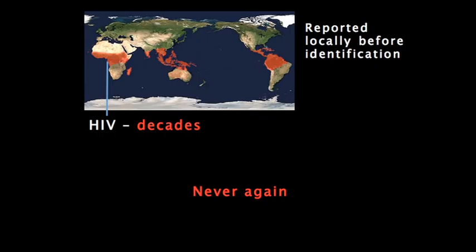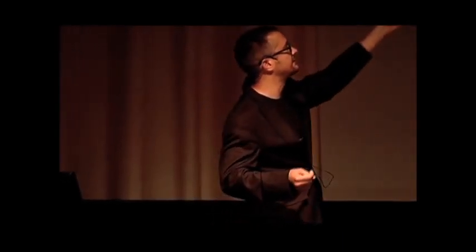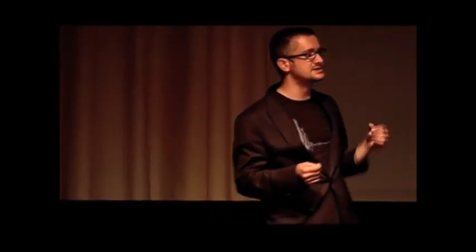Things like the flu are going to be really hard for us to stop. We do hope we will never see again that HIV was around and reported for decades before it was finally isolated. As well as there not being an organization that tracks all outbreaks, just like you've seen in the movies, there is not in fact an organization that is mapping this to transportation and social networks. So that's going to be our next step — combining information in that way.